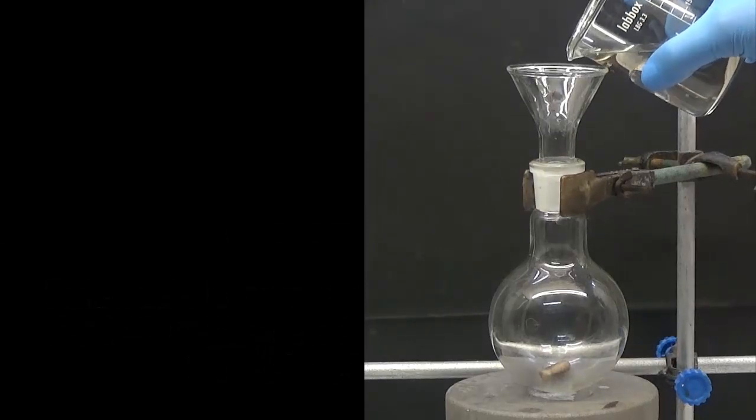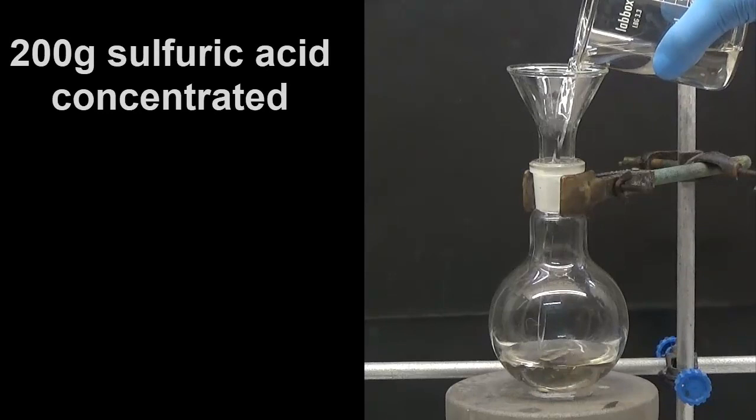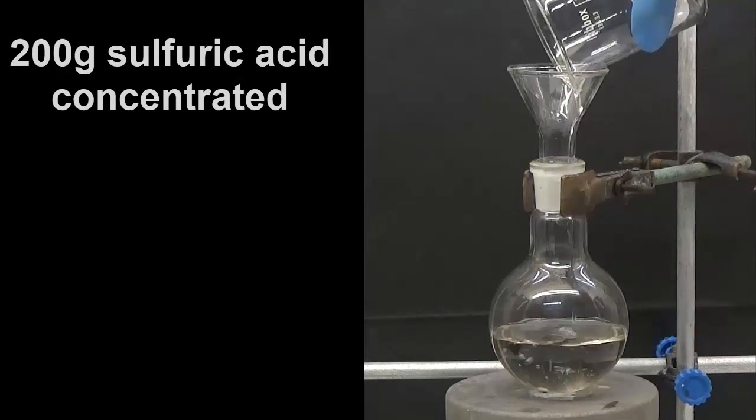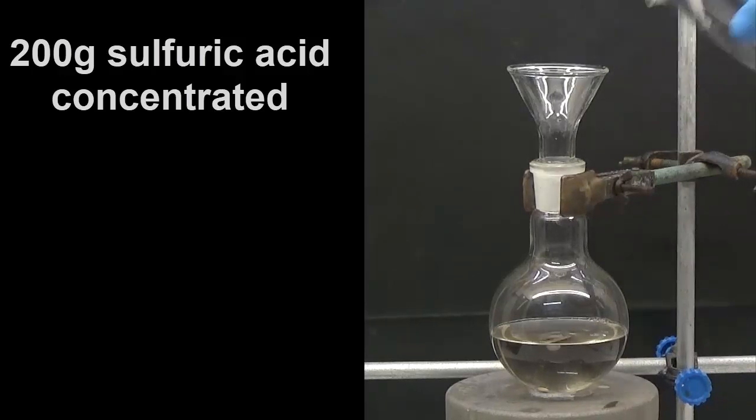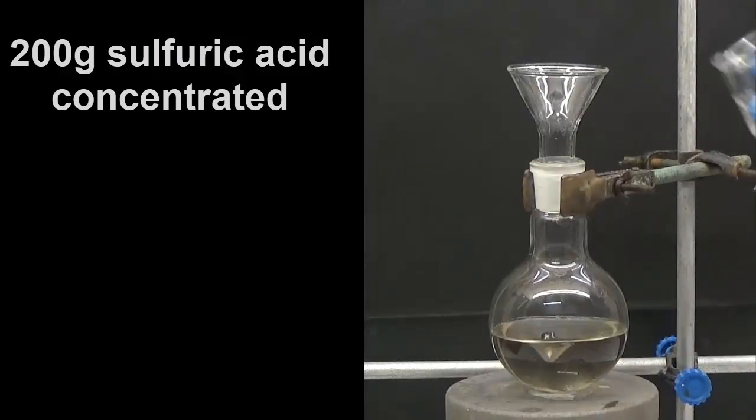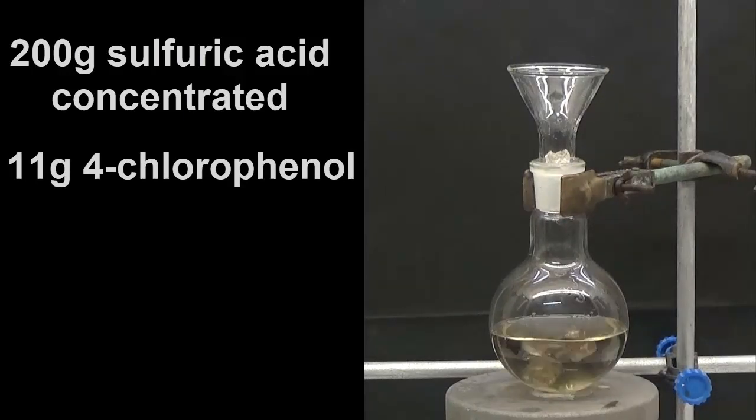To proceed with its preparation, put 200 grams of sulfuric acid in a 250 ml flask. With stirring, add 11 grams of 4-chlorophenol.